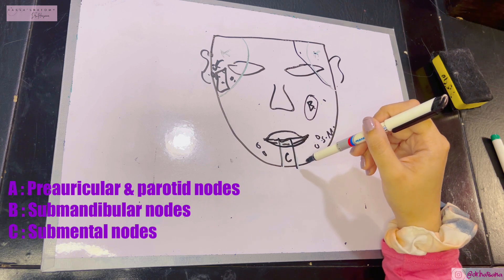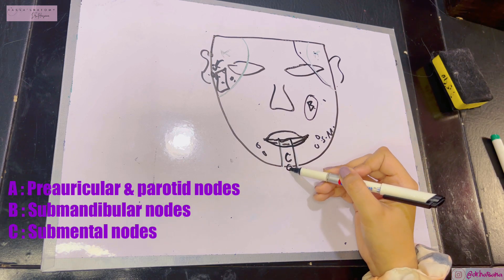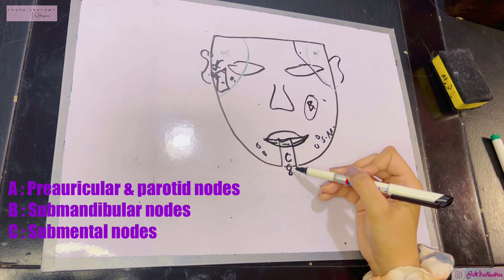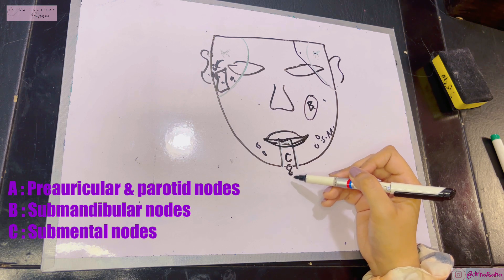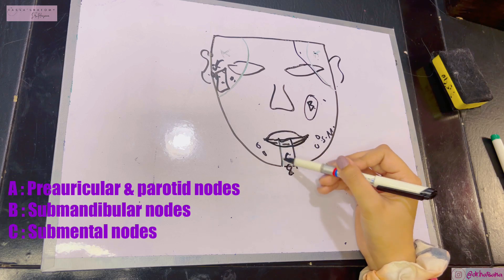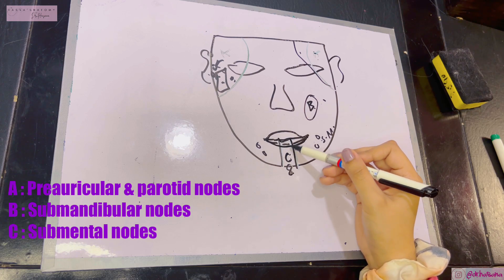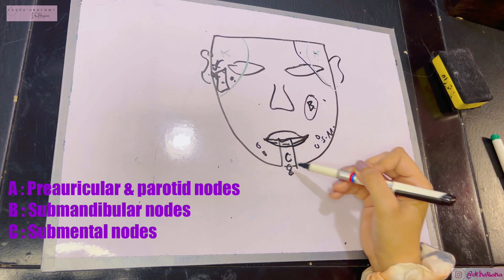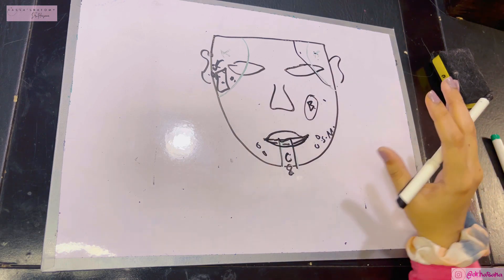Finally, territory C is the lower territory, lying in the mental region — the chin. Just below the chin lie the submental lymph nodes, and this area drains into them. The C territory includes the medial part of the lower lip and the chin. That's all for the lymphatic drainage of the face.